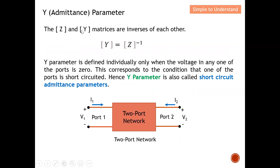The Z and Y matrices are actually inverses of each other. As noted earlier, admittance and impedance have an inverse proportional relationship, and this also holds at the matrix level — they are inverses of each other.